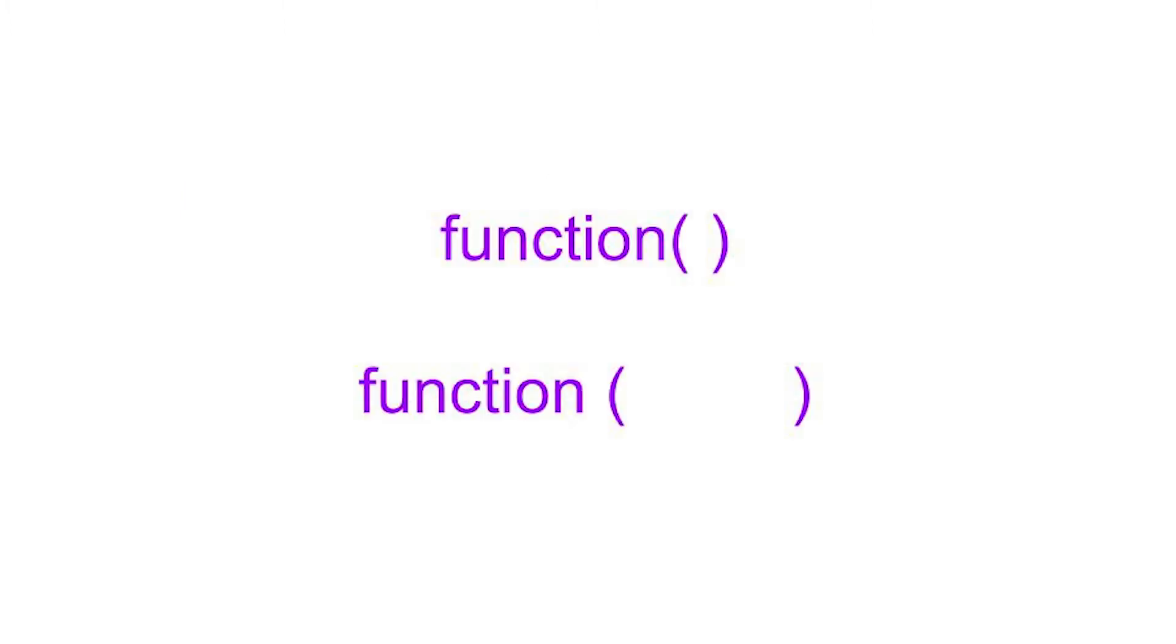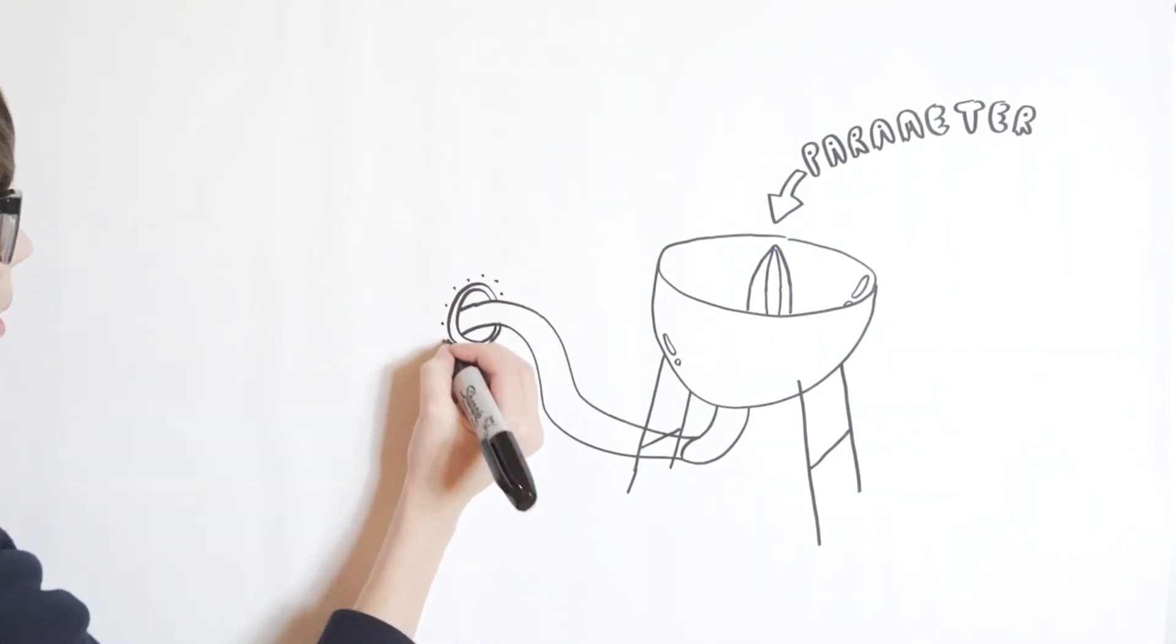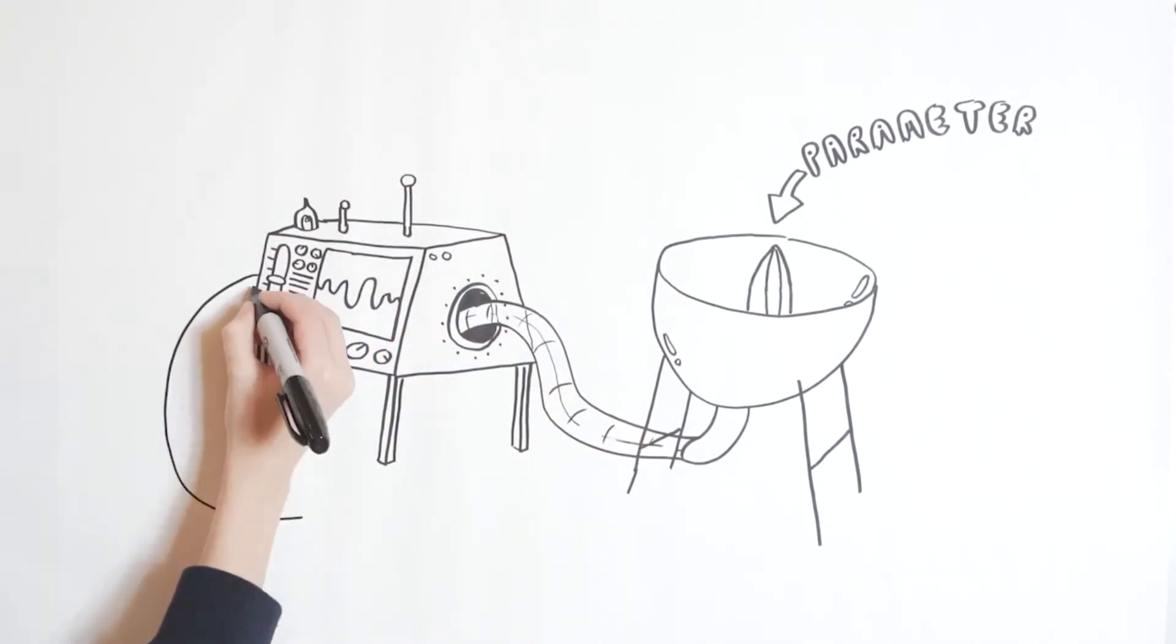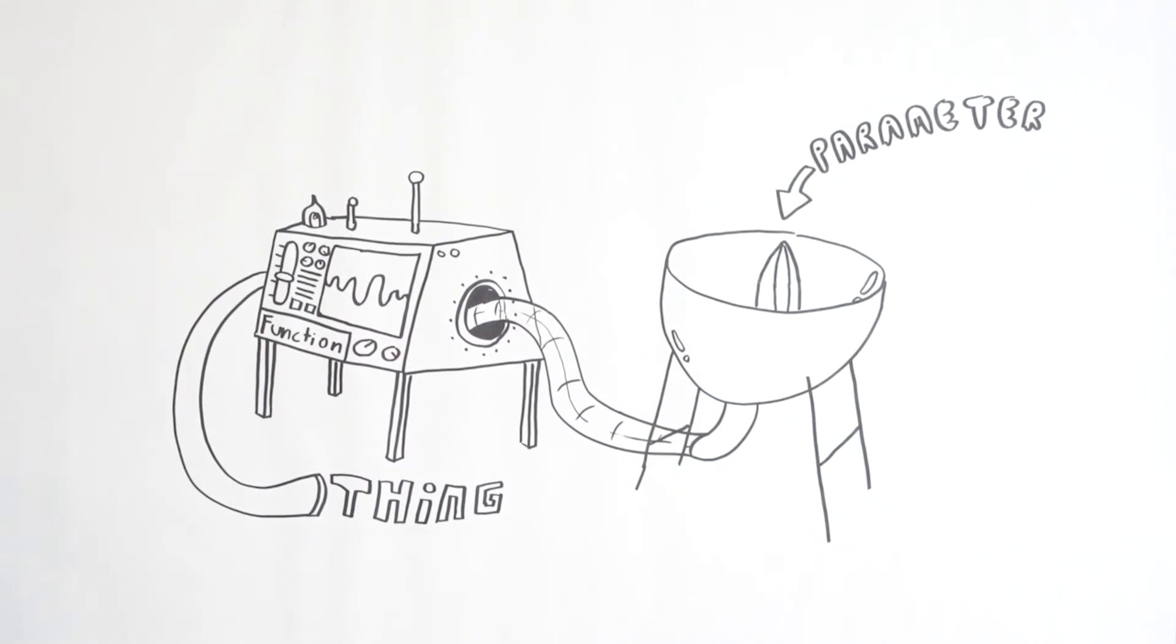To summarize, a function is like a machine. It is followed by parentheses that hold information about what it will do. That information is called the parameter. The parameter runs through the function and becomes something else. Here to illustrate this concept is 12-year-old artist Jonas. Isn't that awesome? I could watch artists all day, which is why I love code world because you get to be an artist through coding. Alright, let's write a new program.